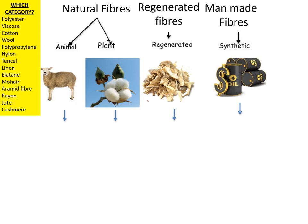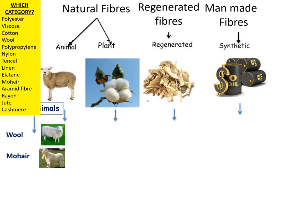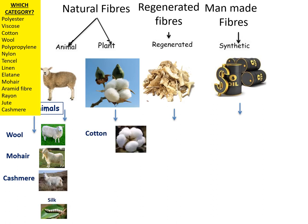Natural fibres come from animals and plants. In the animal category, you can get wool from sheep, mohair from goats, cashmere from goats, and silk from the silkworm. In the plants category, we have cotton from the cotton plant, linen from the flax plant, and jute.